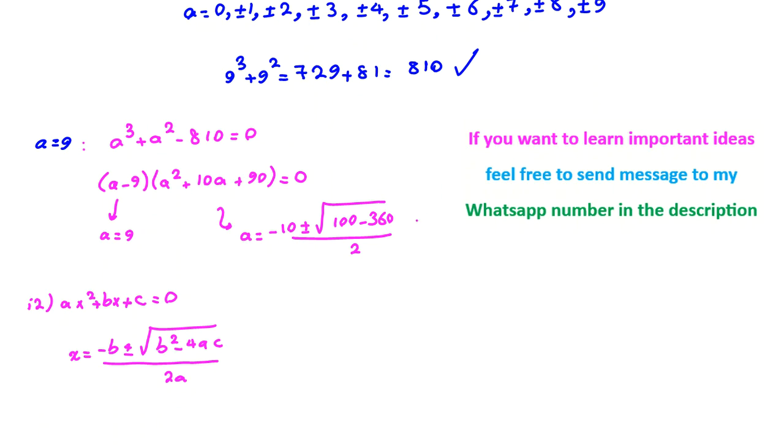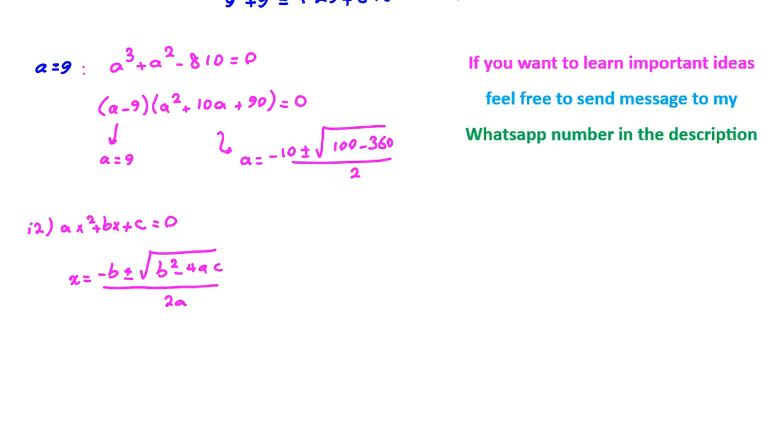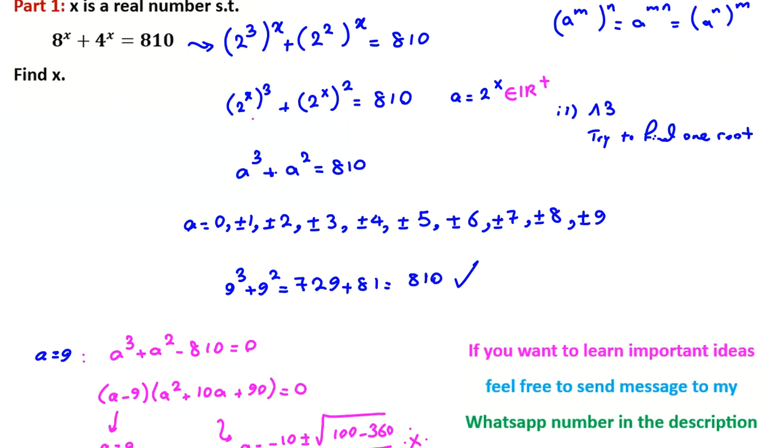But because inside square root is negative, we don't have any real answer for a. And the problem says that x here is real number. When x is real number, 2 to the x is also real number. 2 to the x is positive real number. So we cannot have complex numbers like this. So here we don't have any answers. So a is 9. A was 2 to the x.